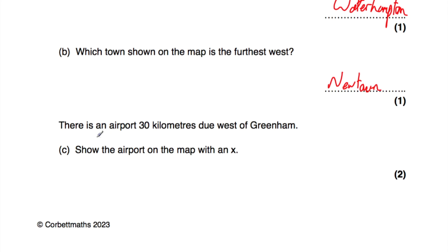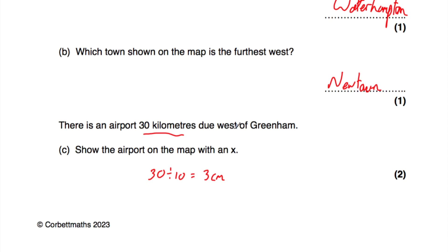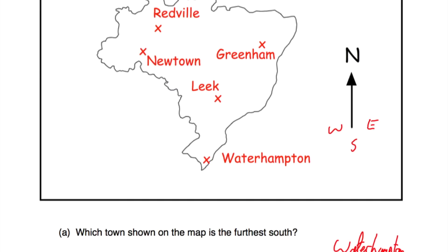Next, we're told there's an airport that's 30 kilometers due west of Greenham — show the airport on the map with an X. It's 30 kilometers, and the scale is one centimeter represents 10 kilometers, so 30 kilometers would be three centimeters, because 30 divided by 10 equals three. So on the map it's going to be a distance of three centimeters due west.